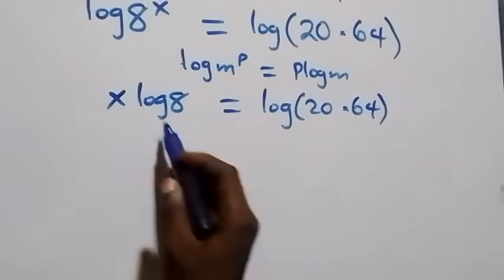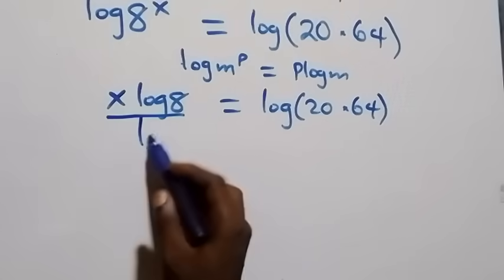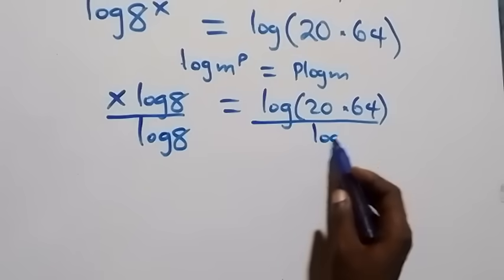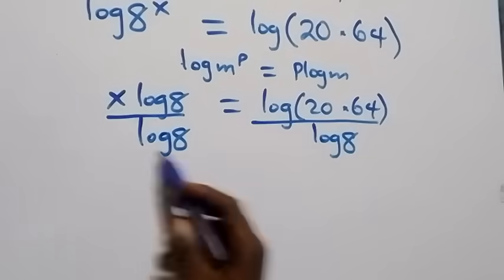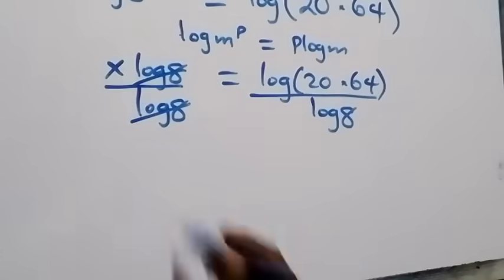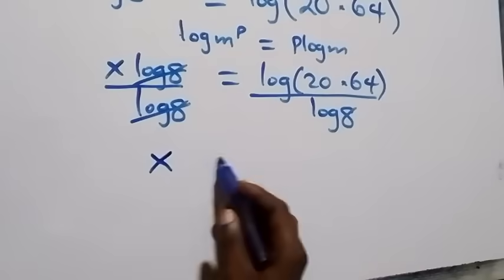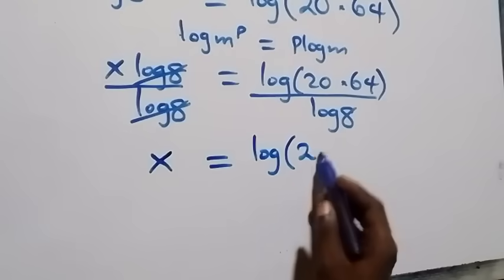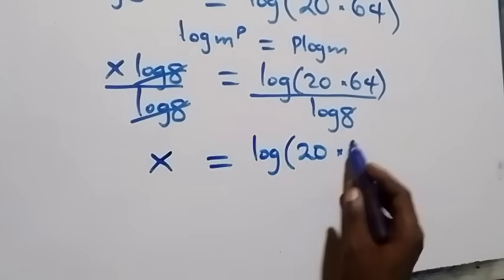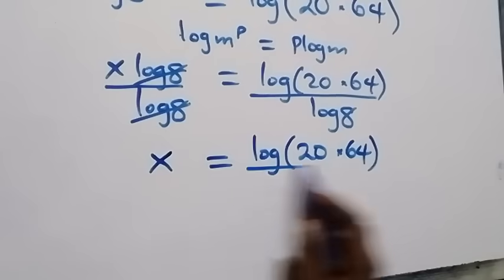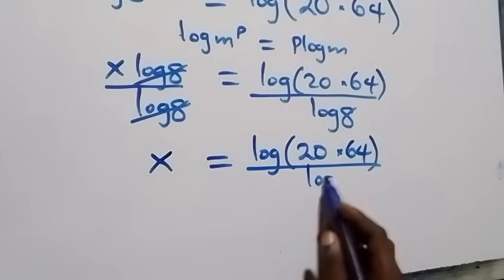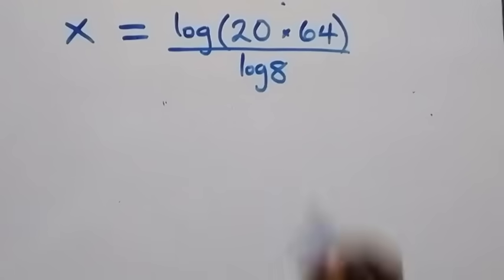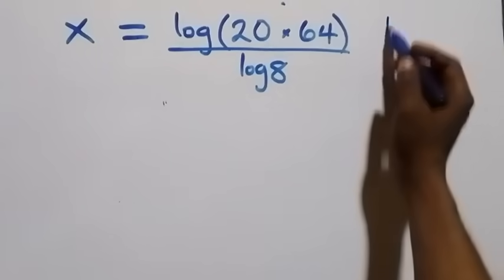Next step, we divide both sides by log 8. Log 8 cancels each other, and we have x equals log of 20 times 64 over log 8.